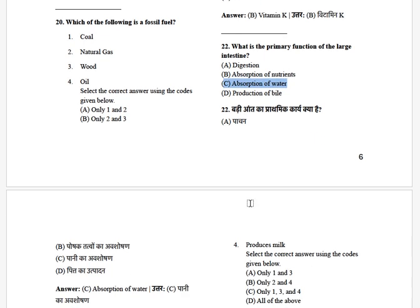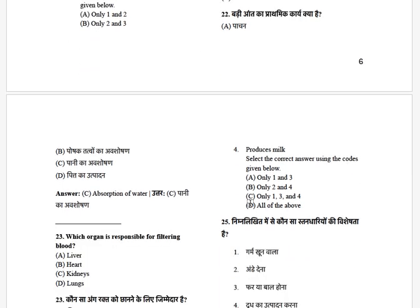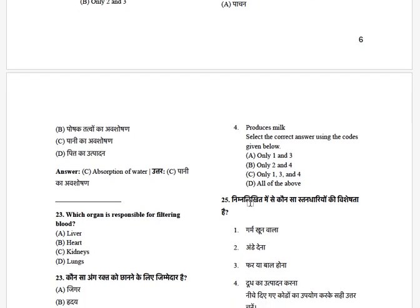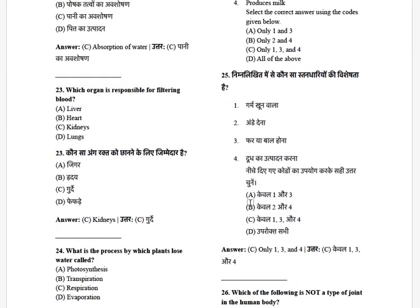This paper is totally based on the pattern of previous year question papers and the level or standard of the examination is also the same. Which organ is responsible for filtering blood? The options are: liver, heart, kidneys, and lungs. The answer is kidney.